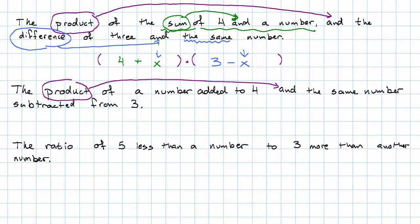The ratio of five less than a number to three more than another number. Okay. Again, the first word for an operation I see. This time it's ratio. Ratio doesn't use the word and. Ratio uses the word to.